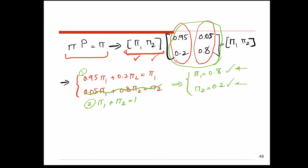The initial market share for cola 1 was 67%. With the advertisement, it goes from 67% to 80%. That's great progress, but we have to see if this increase in market share would bring enough profit to justify the $500 million cost of the advertisement.